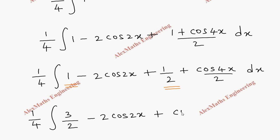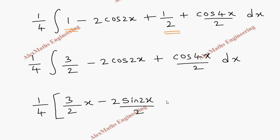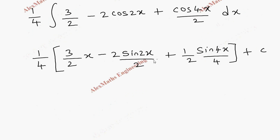We're going to integrate, keeping 1/4 outside. The integral of 3/2 is (3/2)x. The integral of cos is sin, so -2cos2x integrates to -sin2x / 2. Then plus (1/2) · sin4x / 4, and we have plus C.